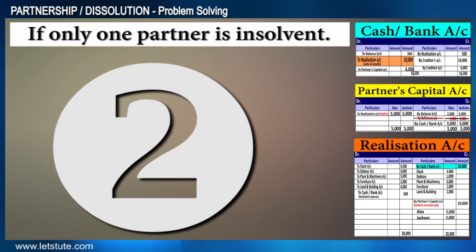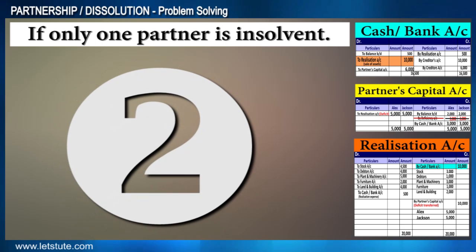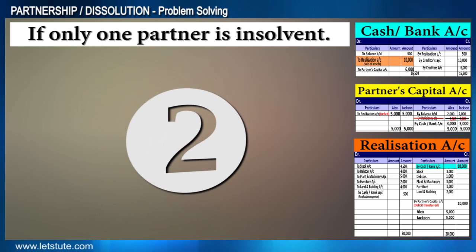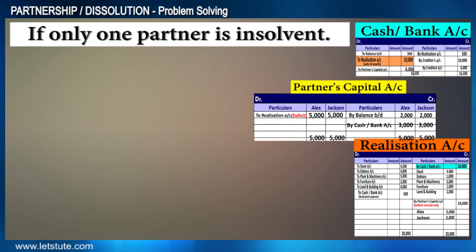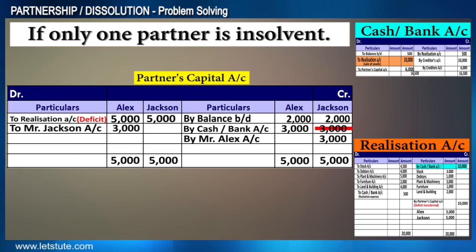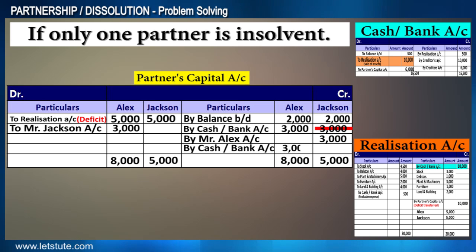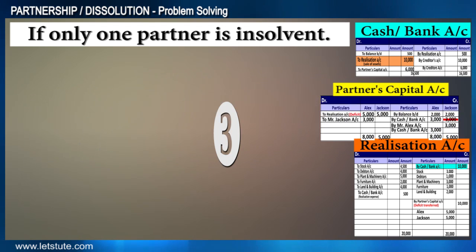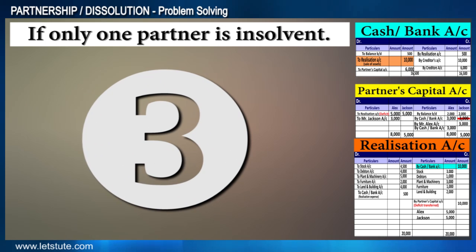The next twist: what if one partner is insolvent and the other is solvent? In such a case, Mr. Jackson's account will be settled by Mr. Alex, and he would bring in additional cash of 3000 to pay off the creditors.